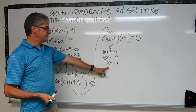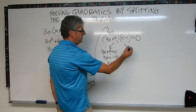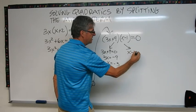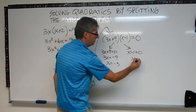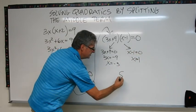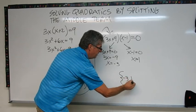This one is super easy. x minus 1 equals 0. x equals 1. So my two solutions are negative 3 and 1. There you go.